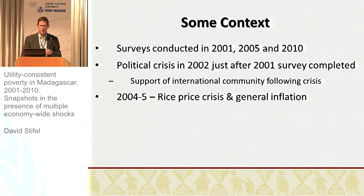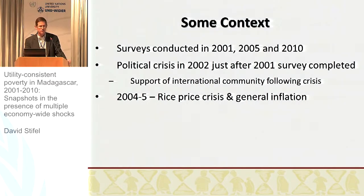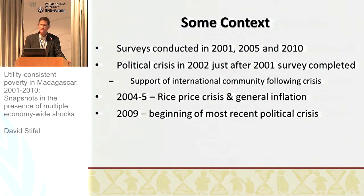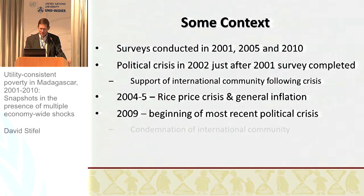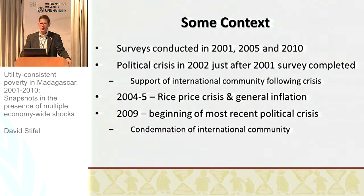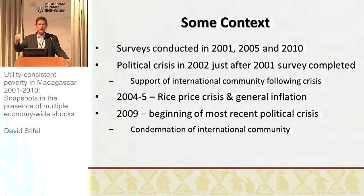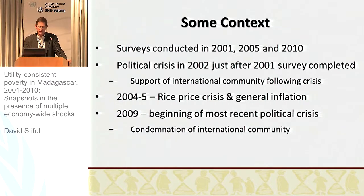Given that rice is the main food consumption item, households were hit quite hard, and this was just around the time of the second survey — so we are having repeated shocks. Between just after the 2005 survey, we saw some growth. But then just before the 2010 survey was the beginning of the most recent political crisis, which is ongoing. Because this was effectively interpreted as a coup d'état by the international community, they responded with condemnation and reduction of aid to only humanitarian assistance, so all development assistance was effectively withdrawn.